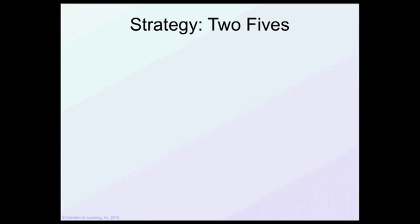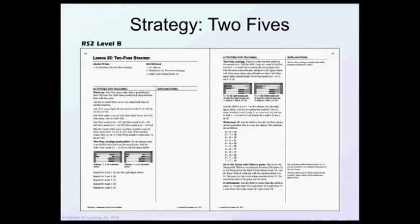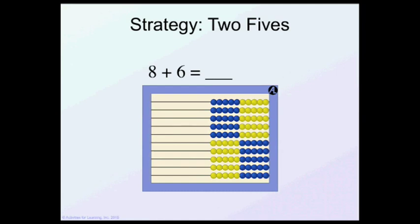This next strategy is called the two fives strategy. 8 plus 6. 8 on the first row, 6 on the next. Before I do anything, can you see the answer? Look at my blue beads. How many do I have? I have 10. How many yellow beads do I have? 4. So my answer is 10 and 4 more, or 14.